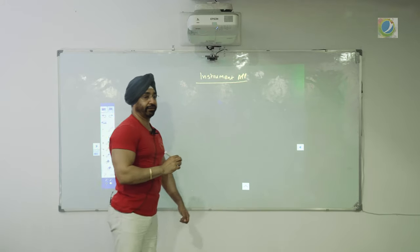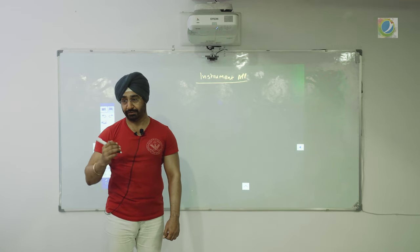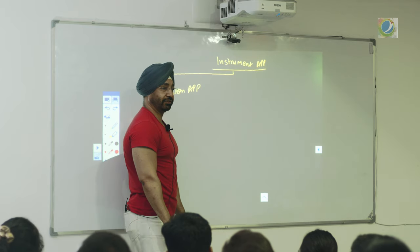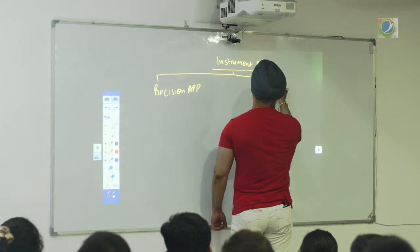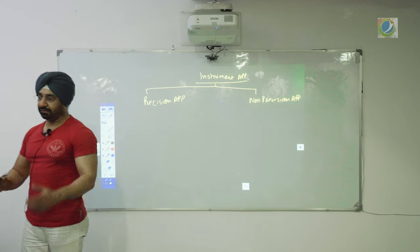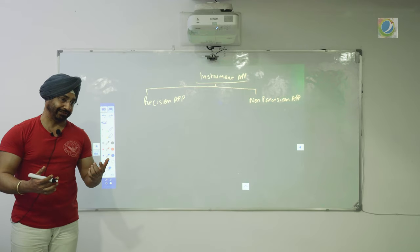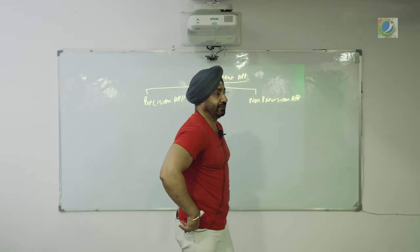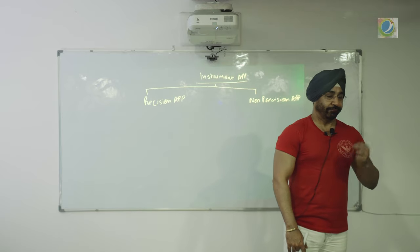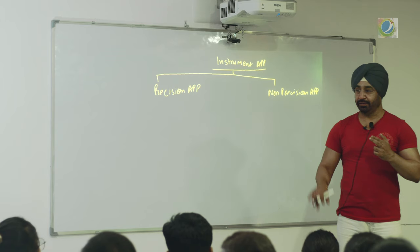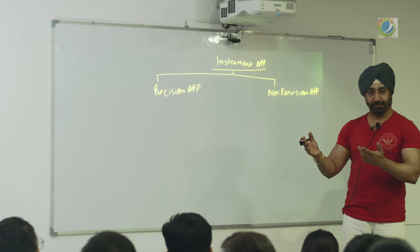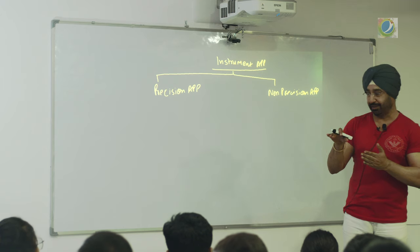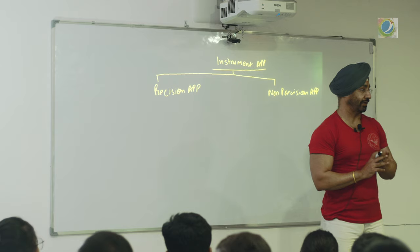Instrument approaches are divided into two categories: precision approach and non-precision approach. The word precision comes from 'precise,' meaning accurate. In a precision approach, you have both guidance available for landing. When coming in to land, you need lateral or azimuthal alignment — whether you are left or right of the centre line. That is lateral guidance.